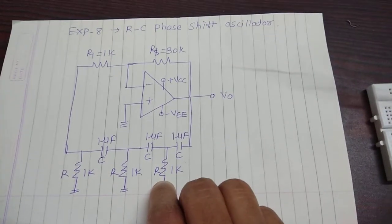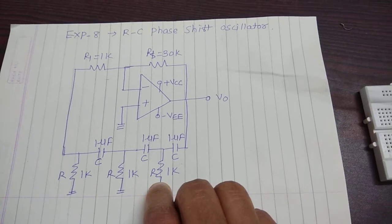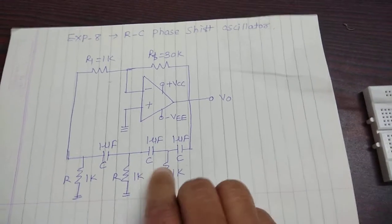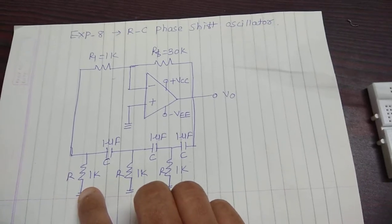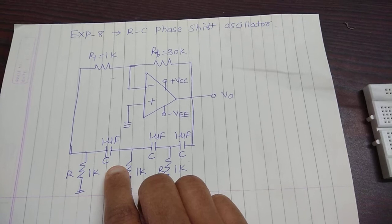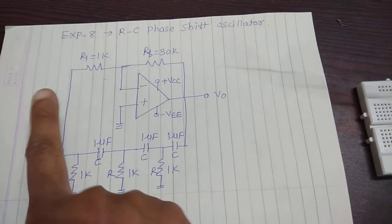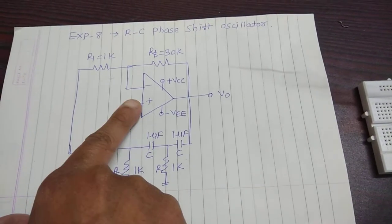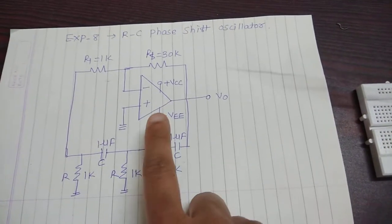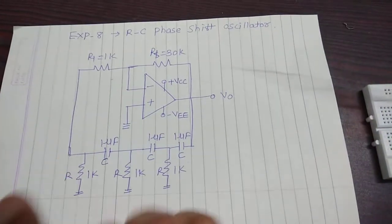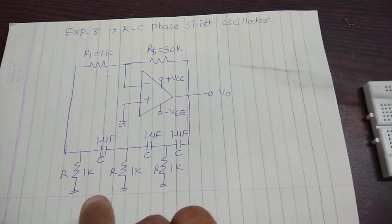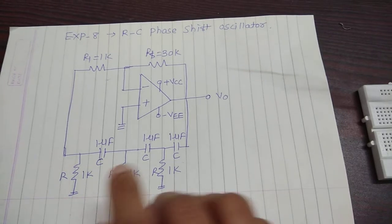This is the function of the RC phase shift oscillator. We have chosen the values: resistance R as 1 kilo ohm, the capacitor as 1 micro farad, resistance R1 connected to the negative terminal as 1k, and RF is taken as 29 times R1, giving 29k — but we are using the standard value of 30k.